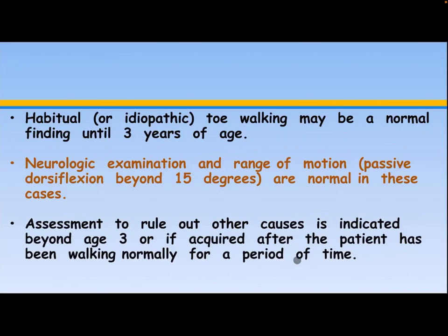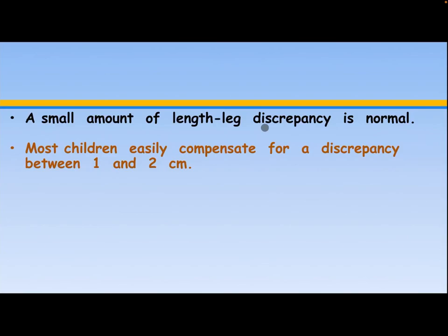A small amount of leg length discrepancy is normal. Most children easily compensate for discrepancy between 1 and 2 cm.